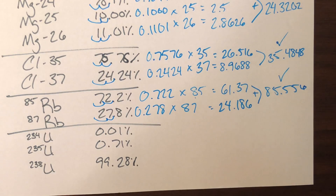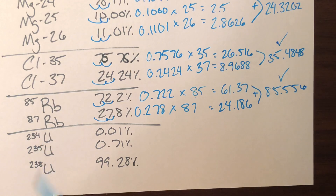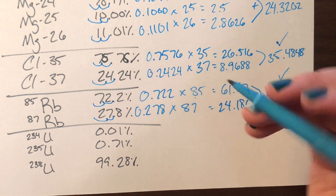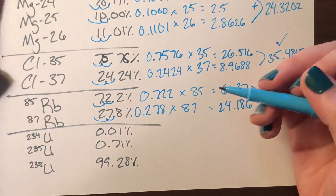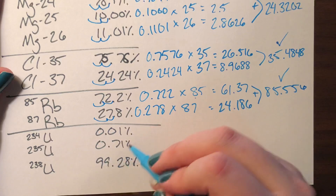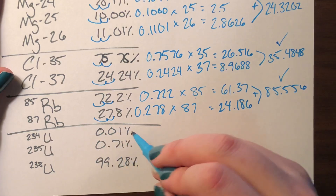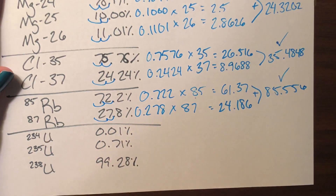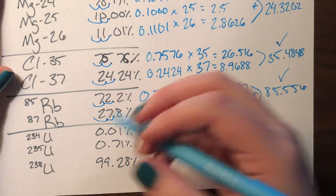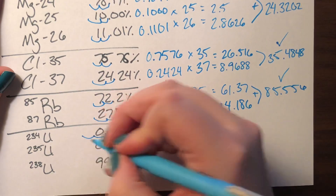Here is our very last example: uranium. We have three naturally occurring isotopes — uranium-234, 235, and 238. The abundances of uranium-234 and 235 are very, very low compared to that of 238, but we'll work through all of them.